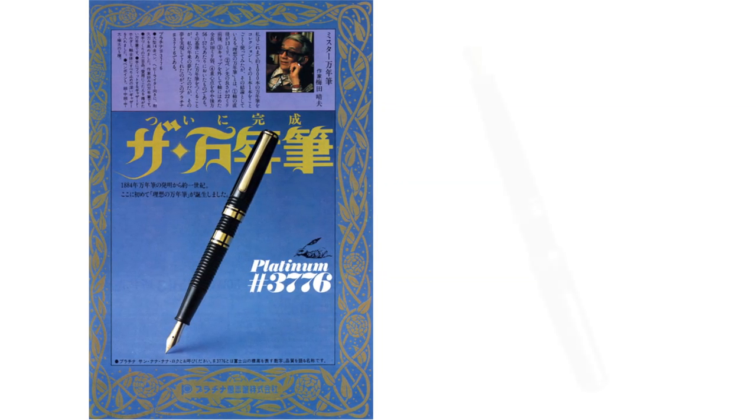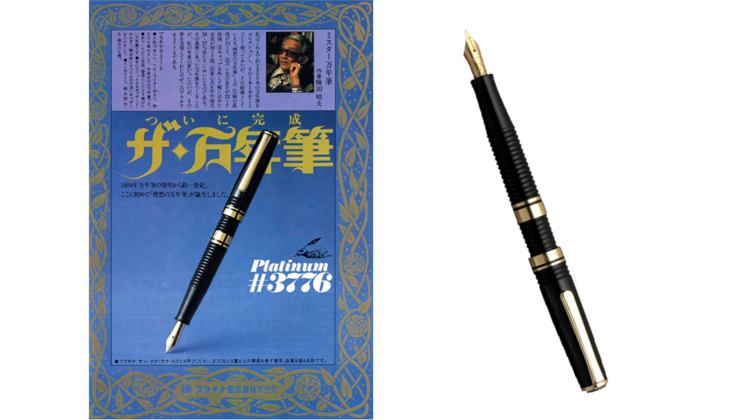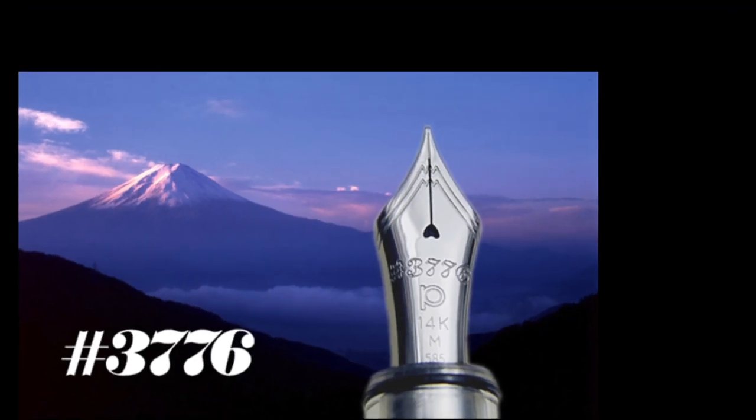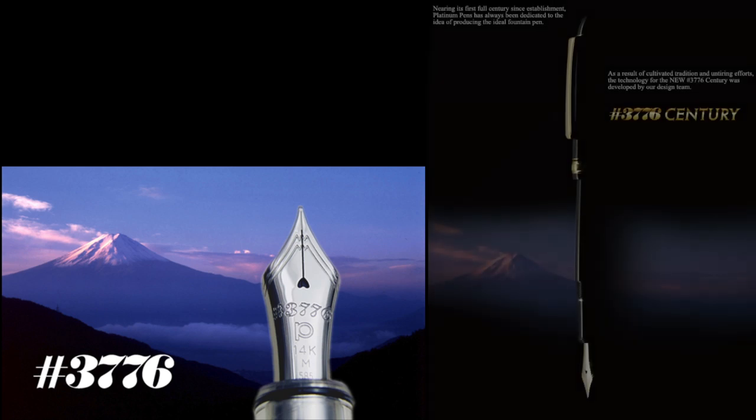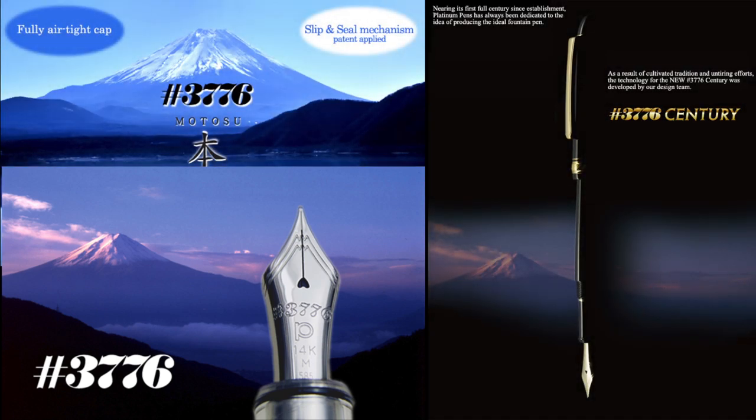In 1978, the Platinum Pen Company created, in their mind, the ideal fountain pen, the 3776. The number 3776 expresses the height in meters of Mt. Fuji, the highest peak in Japan and can often be seen in Platinum's marketing material.